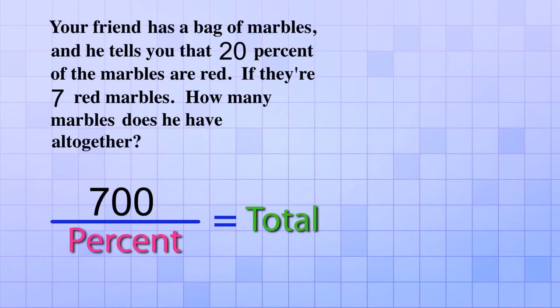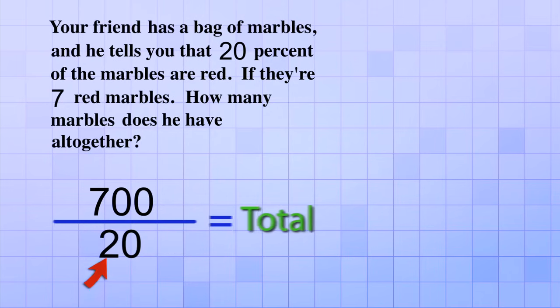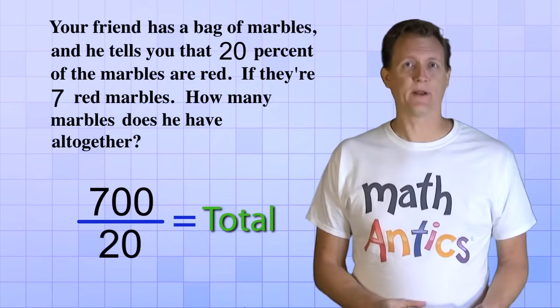And in step 2, we take that 700 and divide it by the percent, which we're told is 20. Okay, 700 divided by 20.